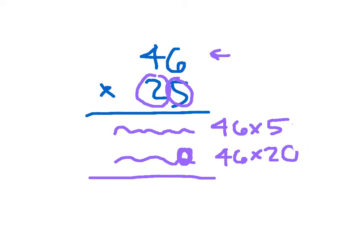Finally, on the last line, I'm going to write 46 times 25. What do I do with those two numbers? I would add them. The number 25 is broken down into 5 and 20, and that's where each of those products goes.